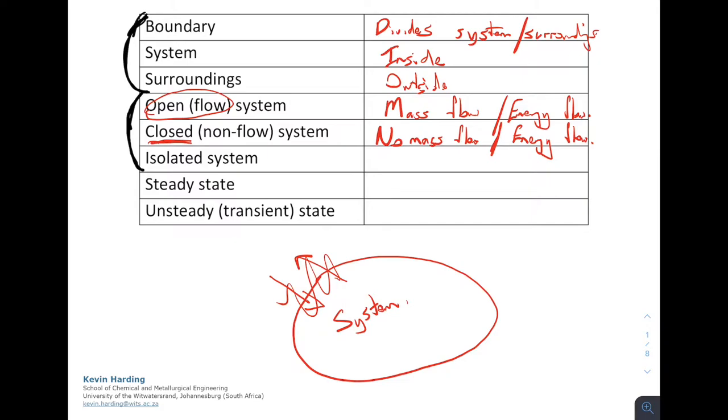The last one, the isolated system, is the simple one. We have no mass, and this time we have no energy. So there's nothing that can go across the boundary in the isolated system.